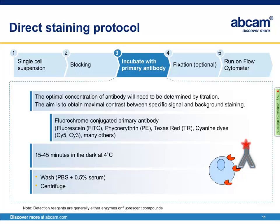The third step is incubating the cell pellet with the primary antibody. The optimal antibody concentration will need to be determined by titration, aiming to obtain the maximal contrast between specific signal and background staining. In this direct staining protocol, the primary antibody is fluorochrome conjugated. The most frequently used fluorochromes are FITC and phycoerythrin (PE), though many more are available. The sample is incubated for 15 to 45 minutes at 4°C and in the dark to protect the fluorochrome from photobleaching, followed by washing and centrifuging.